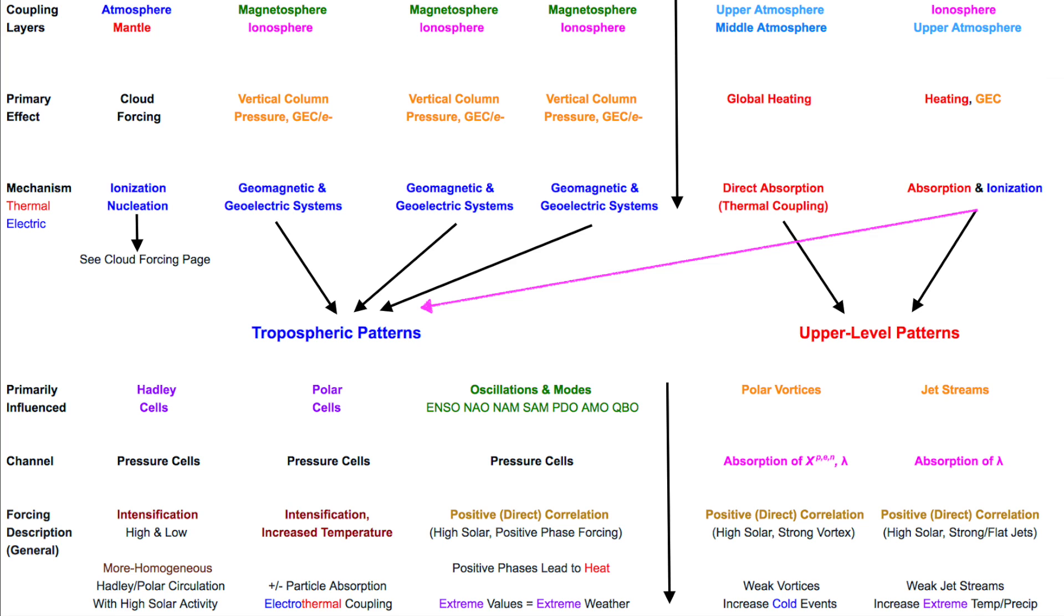We also have the major oscillations, circulations, and modes affected as well. FYI, there is likely interplay between these groups that isn't shown here, but it is not as significant and certainly far less studied than the vertical connections we do show. On the right side, we have the upper level jets, the polar vortices, and the jet streams.